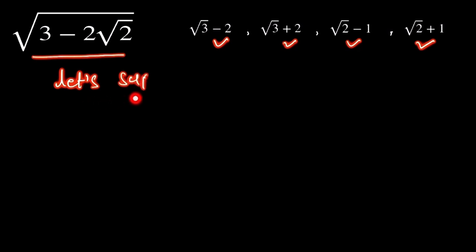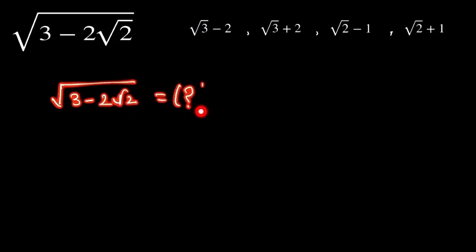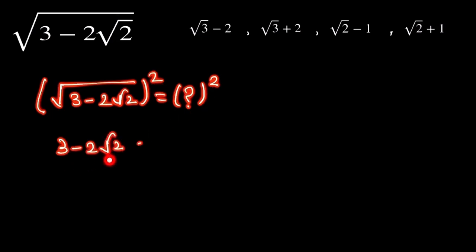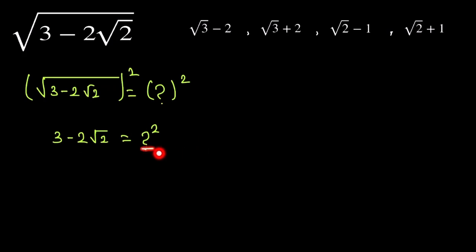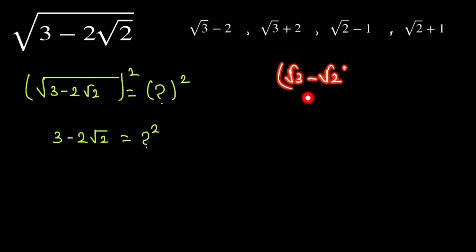Let's suppose √(3 - 2√2) is equal to some number xyz. Now square both sides, so it becomes 3 - 2√2 = xyz². Here there is a minus sign, so our possible answer involves a minus as well.